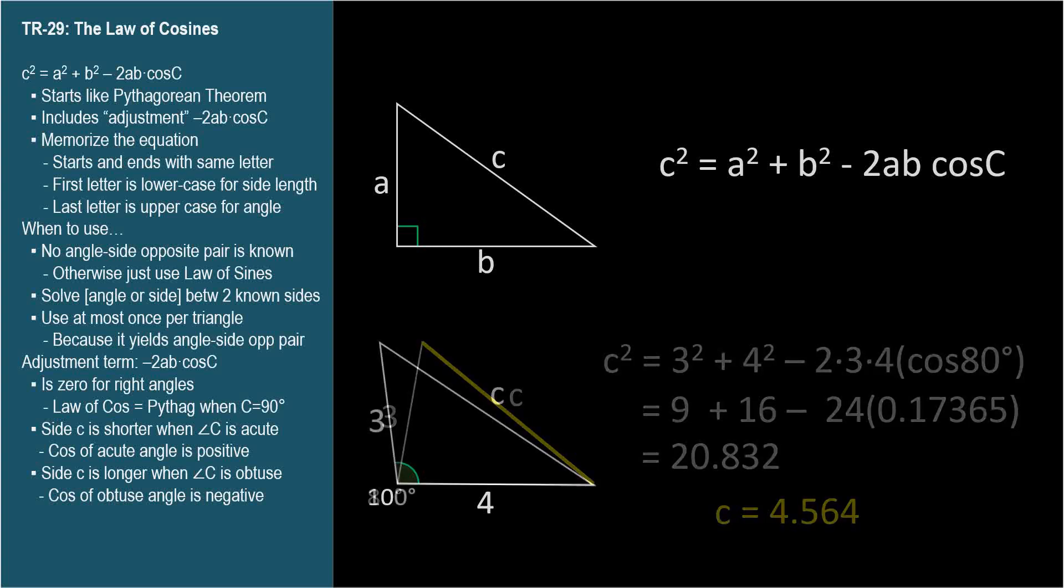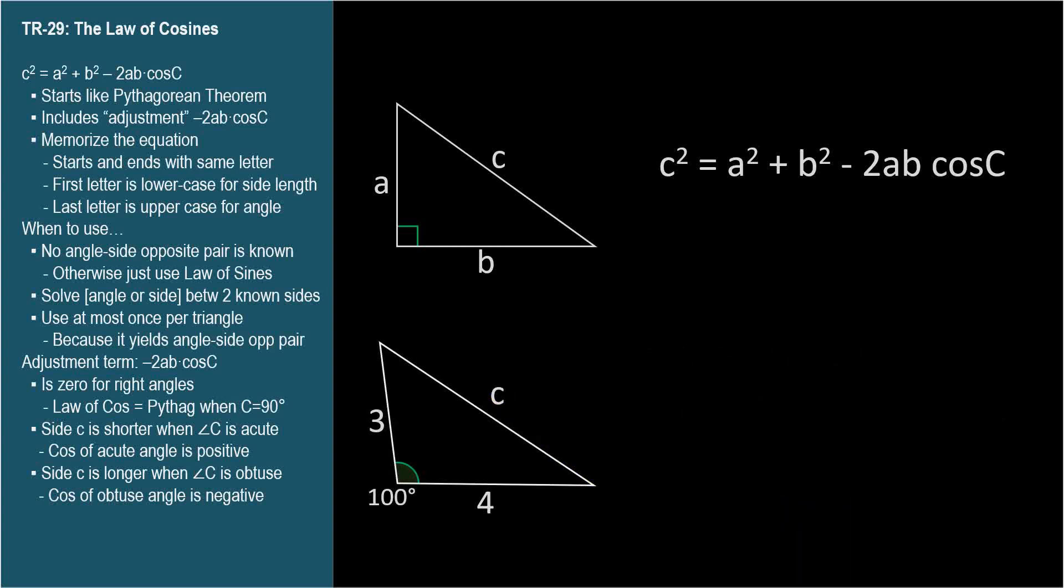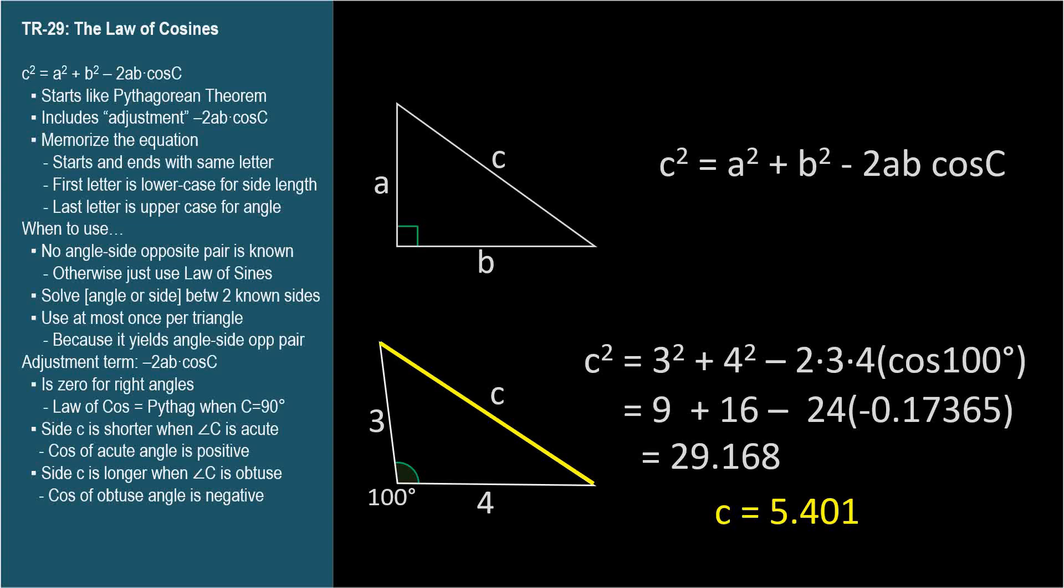Now let's try a slightly obtuse triangle with an angle of 100 degrees. The numbers are similar except cosine 100 degrees is negative. So when we subtract a negative number from 2 times 3 times 4, c squared gets bigger. With a 100 degree angle, c equals 5.401, widening the angle increases the opposite length.